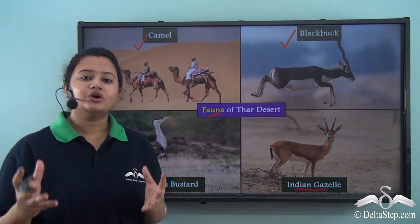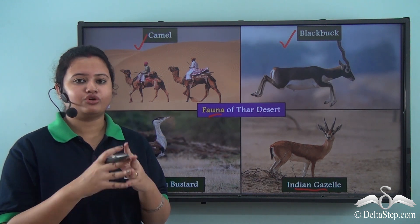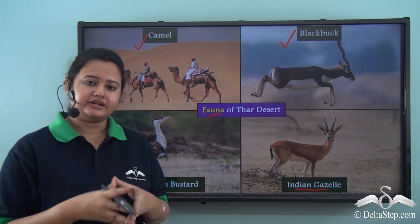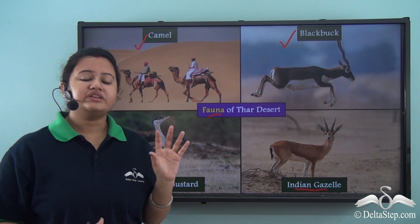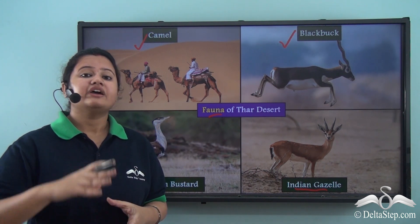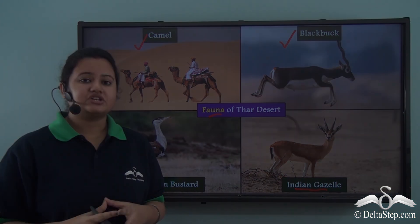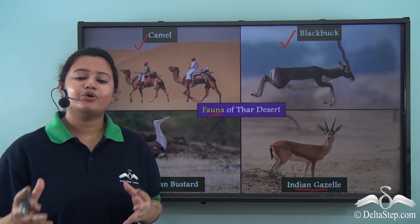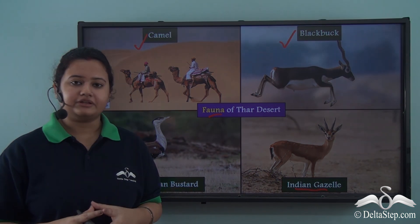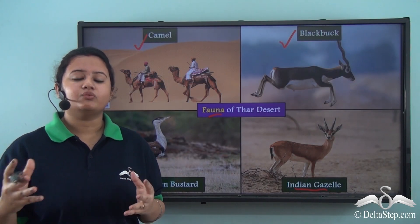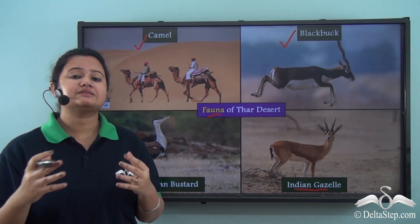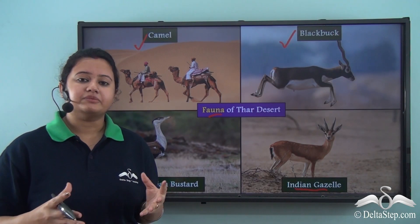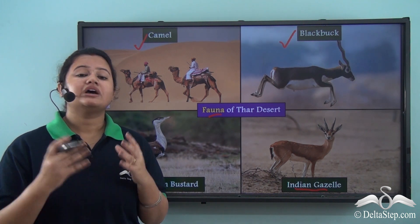In today's lesson we discussed an important physiographic division of India — the Thar Desert. We understood its location and important boundaries: it is located in the western part of Rajasthan and surrounded by the River Indus, its tributary the Sutlej, the Aravalli range, and the Rann of Kutch. We also learned that the Luni River is an important river of Thar Desert. The construction of Indira Gandhi Nahar was an important step that made cultivation of crops possible in Thar Desert. Finally, we discussed some of the animals found there. In our next lesson we shall discuss the Islands of India.